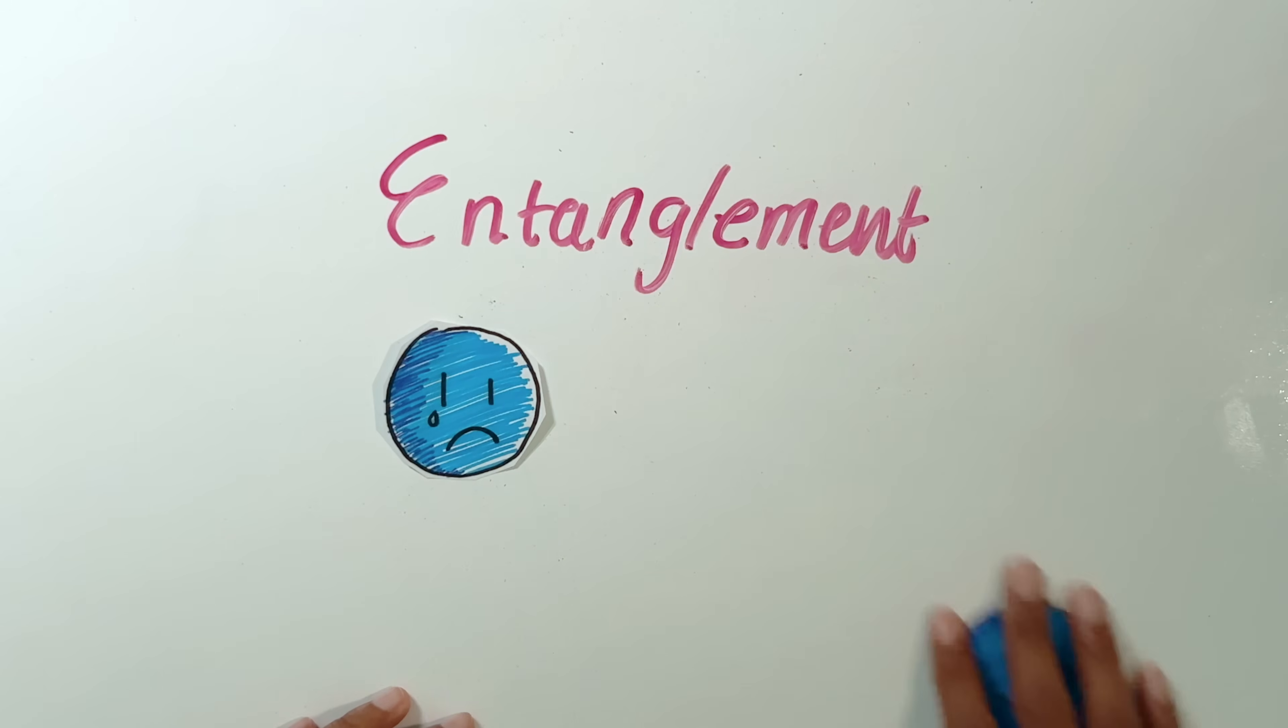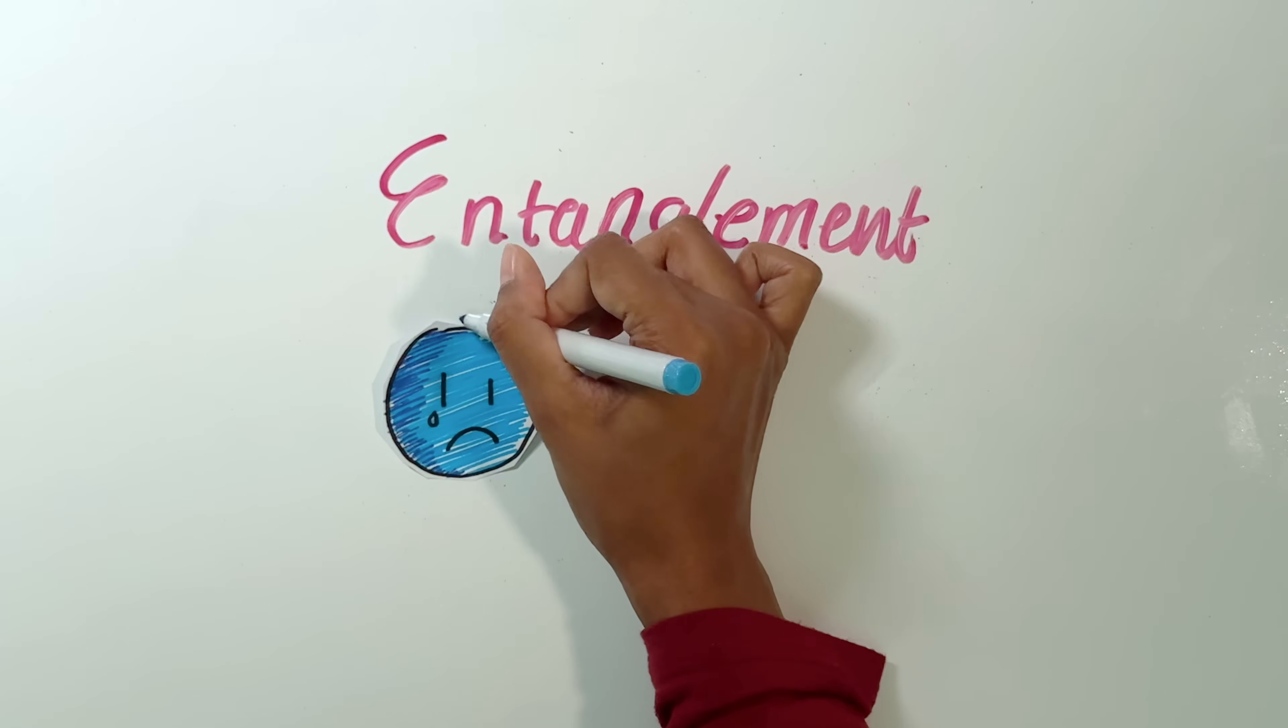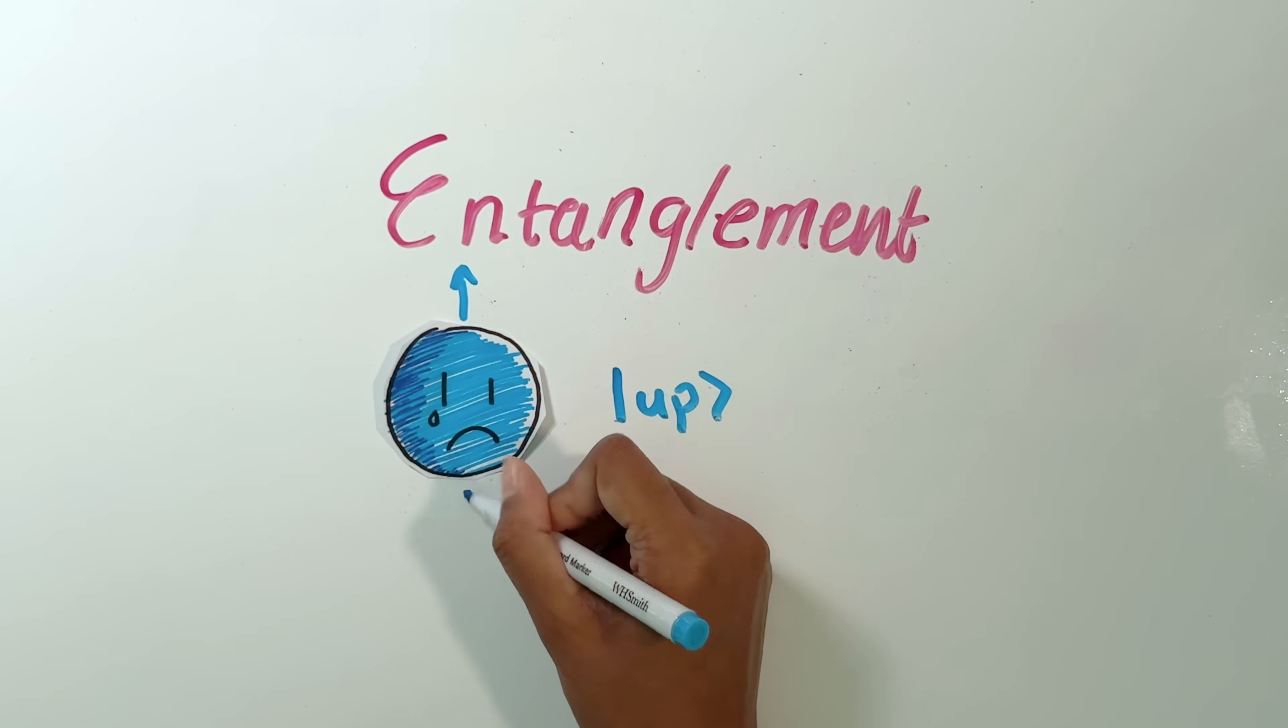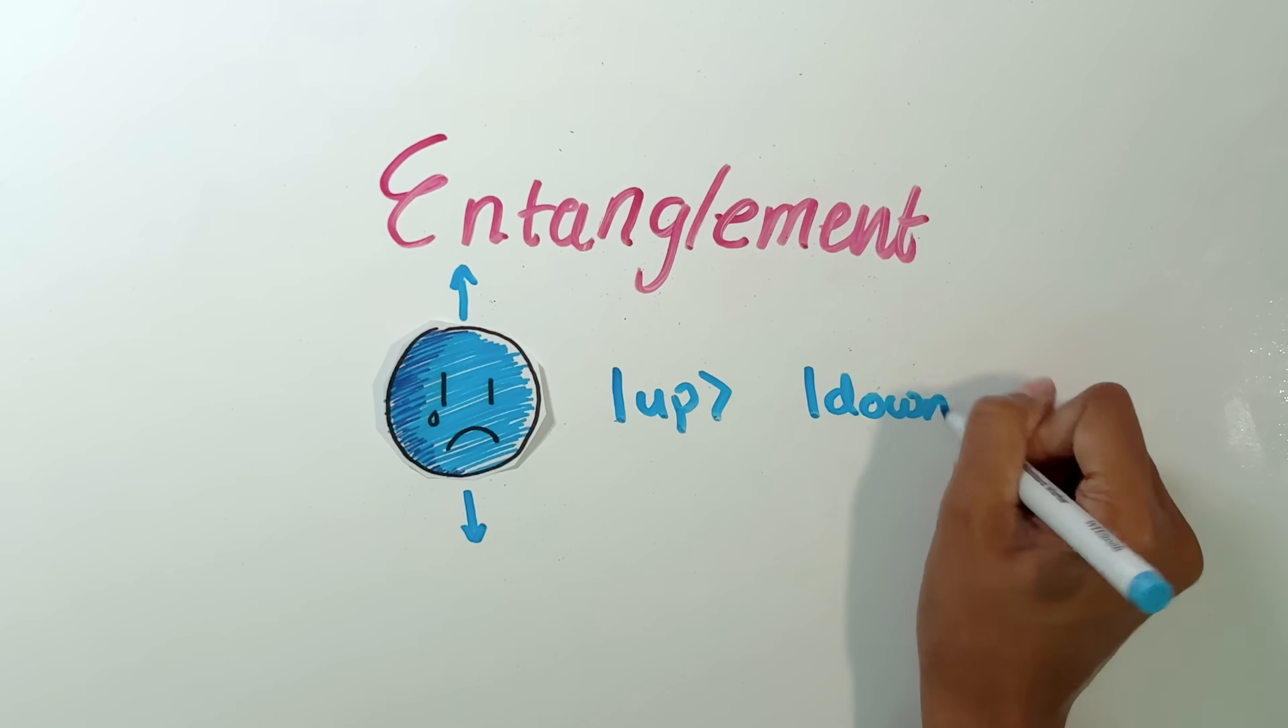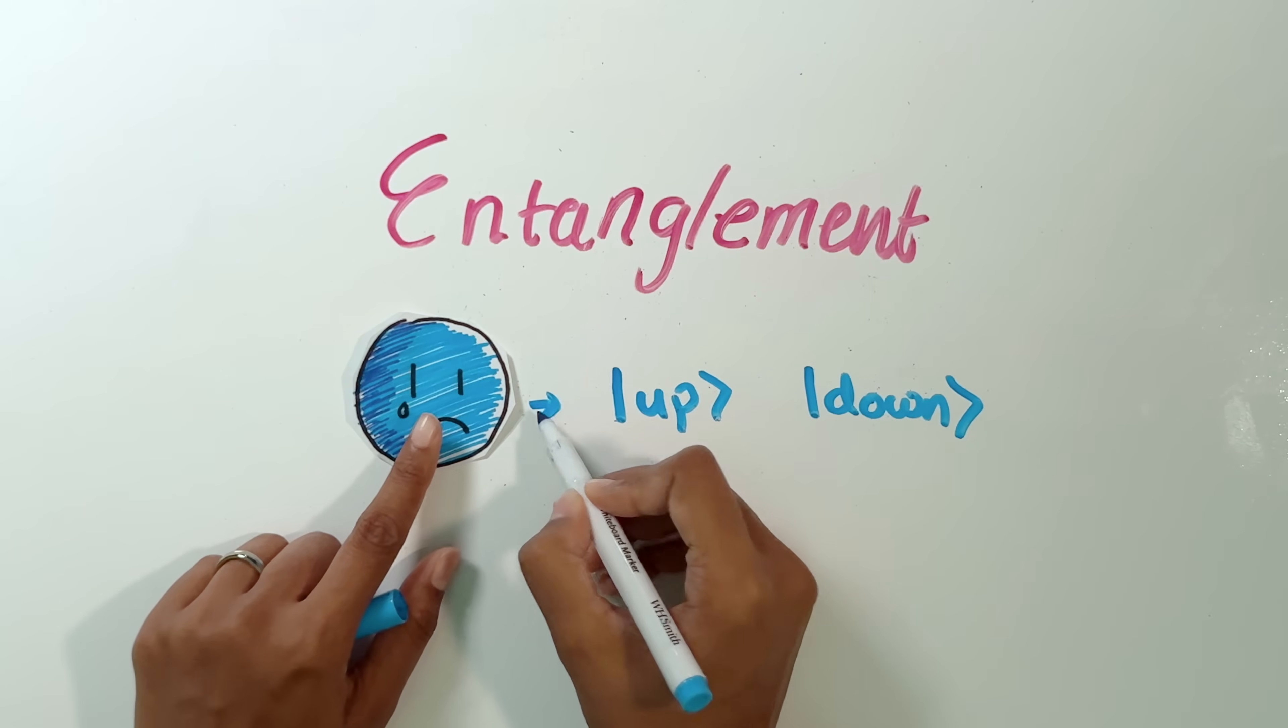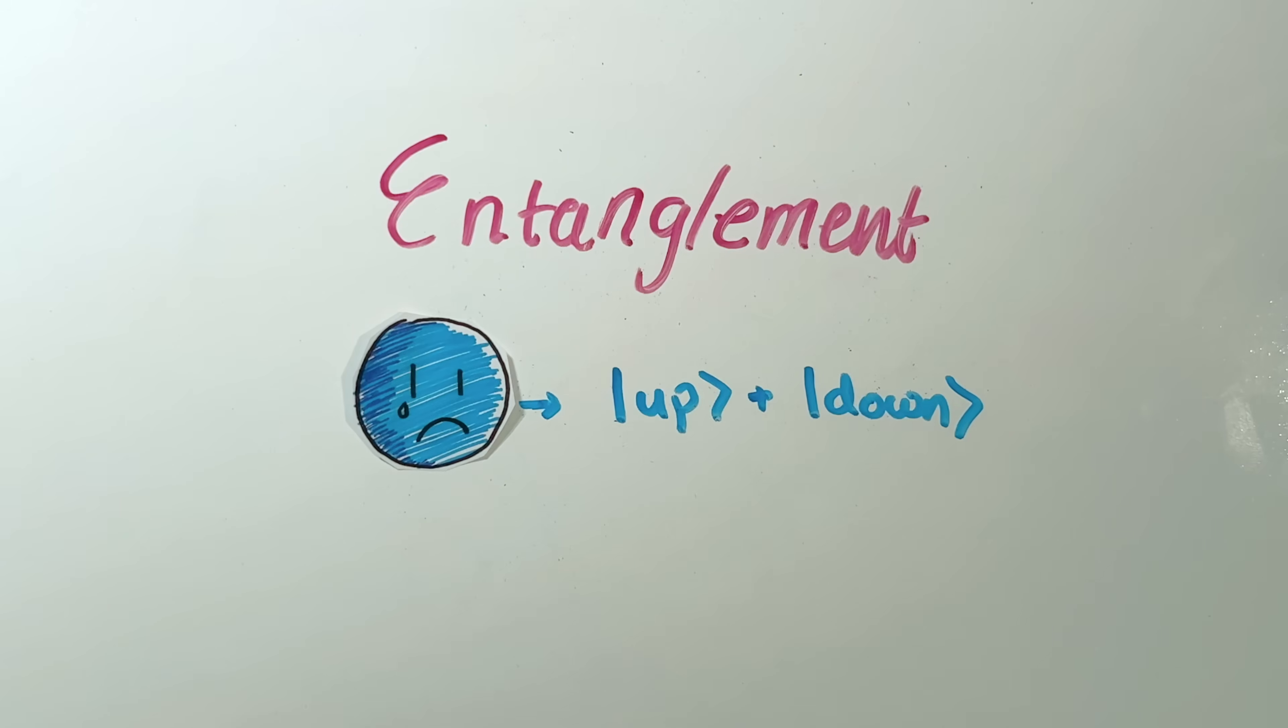So what is actual entanglement? To understand this, let's get rid of one of these electrons for a moment and talk about superposition. So the state of this electron would be up if the electron was like this, and it would be down if the electron's spin was like this. If the spin is like this, then it's both up plus down.